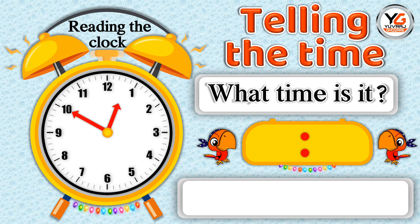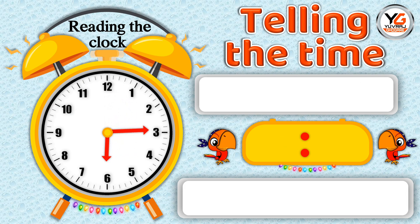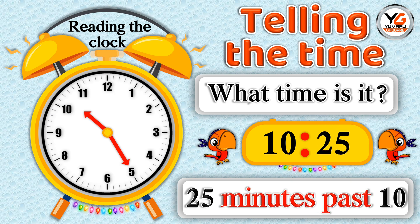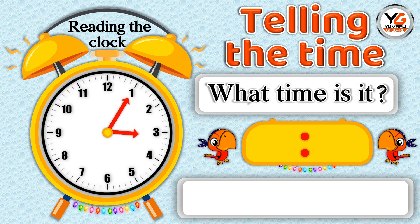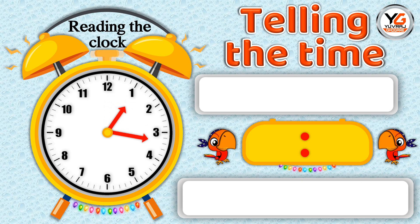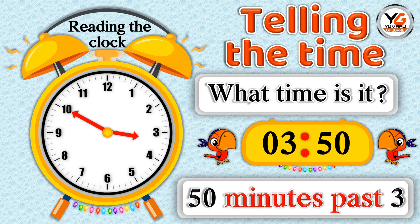What time is it? 12.50 — means 50 minutes past 12. What time is it? 10.25 — means 25 minutes past 10. What time is it? 3.05 — means 5 minutes past 3. What time is it? 3.50 — means 50 minutes past 3.